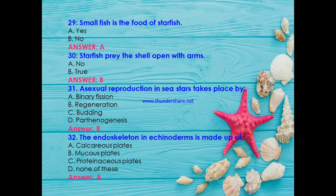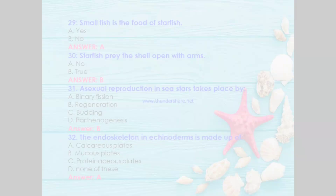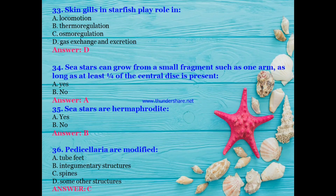Do starfish pry shells open with their arms? True. Asexual reproduction in sea stars takes place by: binary fission, regeneration, budding, or parthenogenesis? The answer is B — regeneration. The endoskeleton in echinoderms is made up of: calcareous plates, mucus plates, proteinaceous plates, or none of these? The answer is A — calcareous plates, meaning plates made of calcium carbonate, which are very strong.